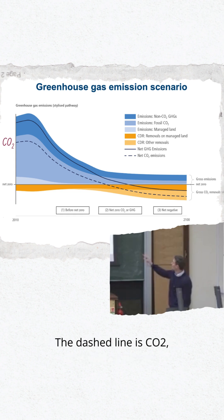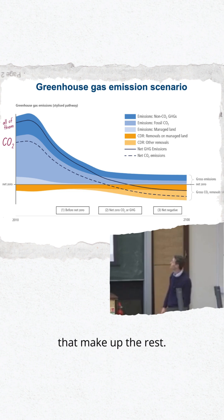The dashed line is CO2 and the solid line is the total. So you can see what Aliki talked about, the contribution of methane and other gases that make up the rest, sort of that two-thirds, one-third if you look over on the left.